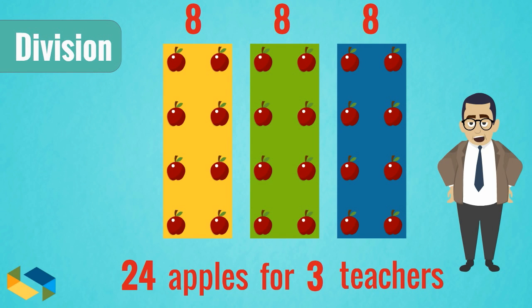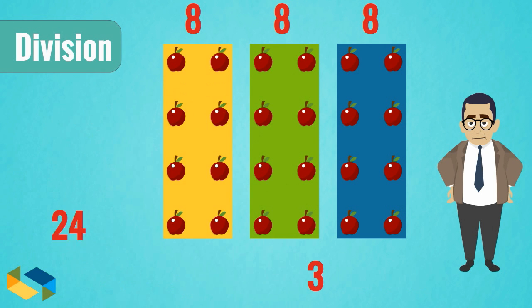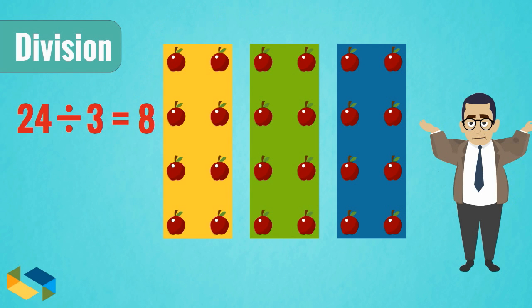This is called division, which means splitting in equal parts or groups. In our example, we write the division expression as 24 divided by 3, with the answer being 8.